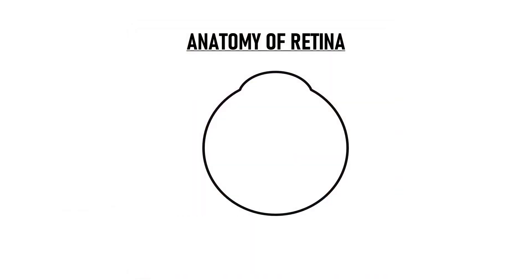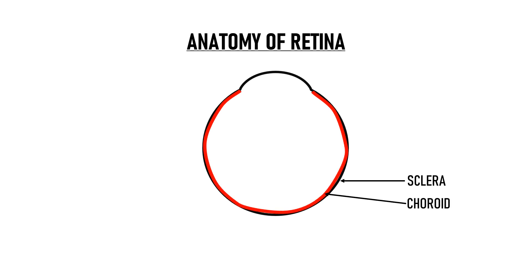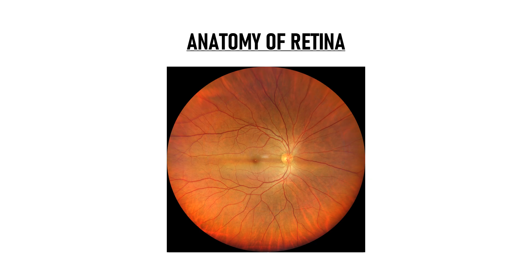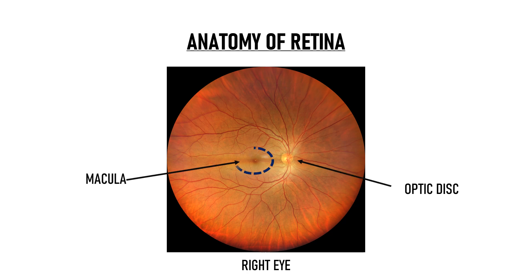But let us first revise the basic anatomy of the retina. This is the outer coat of the eye, or the sclera. Inside the sclera lies the choroid, and inside the choroid lies the retina. On fundus examination, this is what a normal healthy retina looks like. This is the right eye of the patient. This is the optic disc on the nasal side. The central part of the retina is known as the macula, and the centermost part of the macula is known as the fovea.